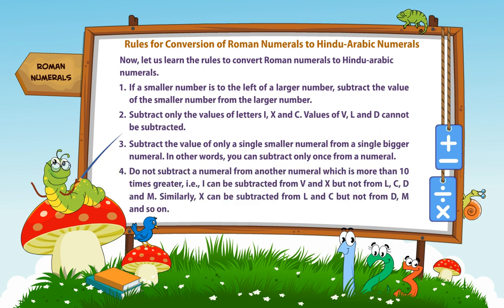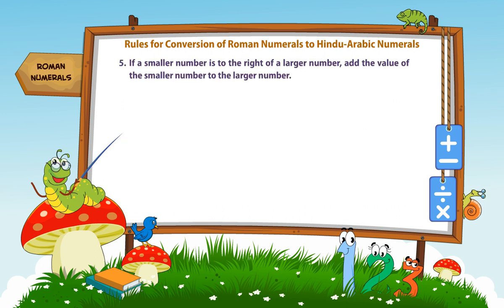Rule number 4. Do not subtract a numeral from another numeral which is more than 10 times greater. That is, I can be subtracted from V and X but not from L, C, D and M. Similarly, X can be subtracted from L and C but not from D, M and so on.